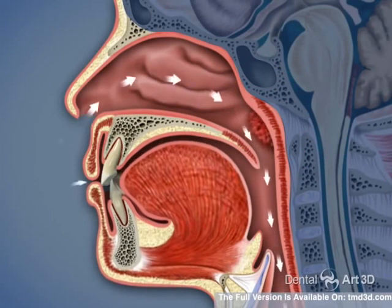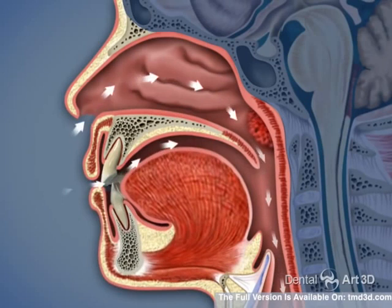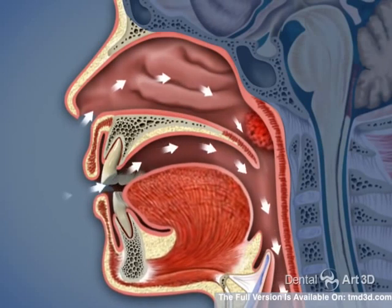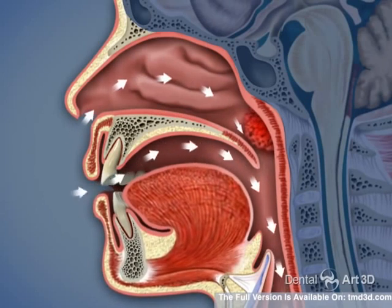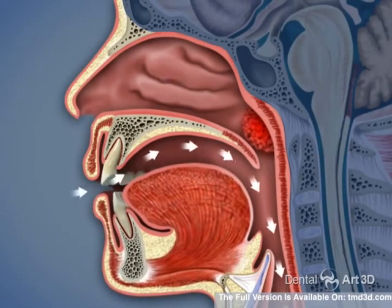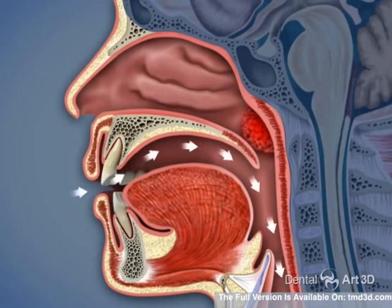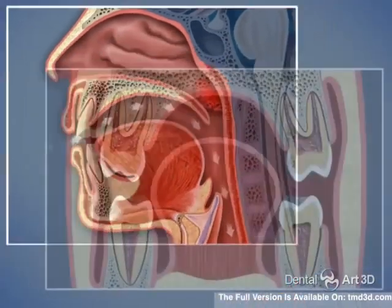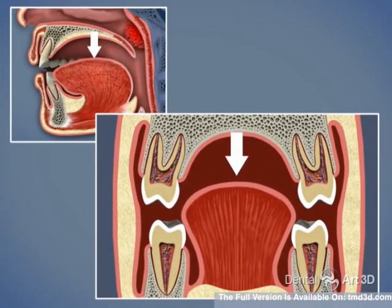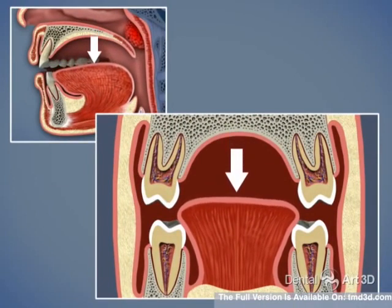As the tonsils and adenoids become swollen, they develop into an obstruction for nasal breathing, and slowly mouth breathing begins to be the primary intake of air into the body. In order to breathe through the mouth, the lower jaw comes down, and the tongue comes off the palate and settles on the lower teeth.